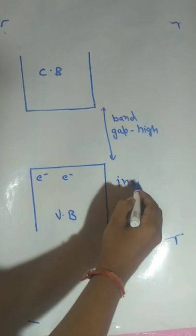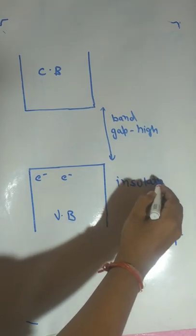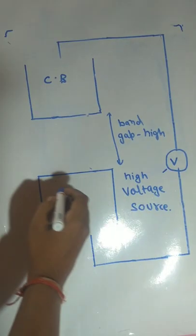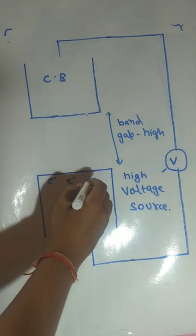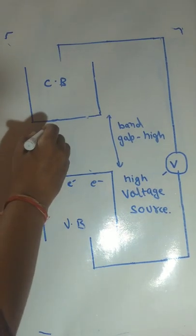Now insulators. They have a large band gap between conduction band and valence band, but if we provide enough voltage then the electrons will be forced to move from valence band to conduction band, making it a conductor.